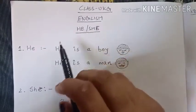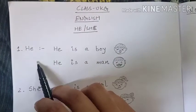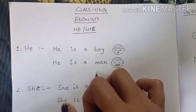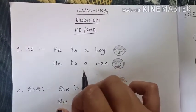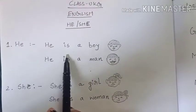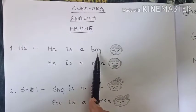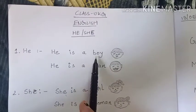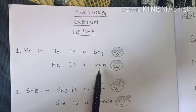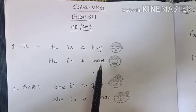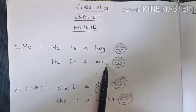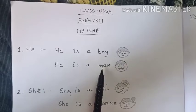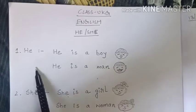We use 'he' when we speak about a boy or a man. So 'he' is used before a boy, man, grandfather, uncle, king — for all of these we use 'he'.